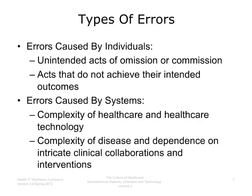Individual errors can also be acts that do not achieve their intended outcomes — an example of this would be a misdiagnosis based on an error. The second main type of error is error caused by systems. These errors are a function of the complexity of healthcare and of healthcare technology, the complexity of treating disease, and the dependence of the process of healthcare on a multiplicity of clinicians and interventions.